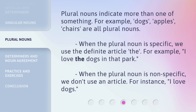Plural nouns indicate more than one of something. For example, dogs, apples, chairs are all plural nouns. When the plural noun is specific, we use the definite article, the. For example, I love the dogs in that park. When the plural noun is nonspecific, we don't use an article. For instance, I love dogs.